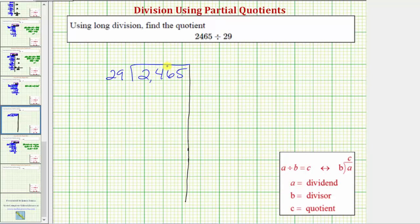Before we begin though, it's helpful to find products involving the divisor, or in this case, products involving 29. For example, we know that 1 times 29 equals 29.